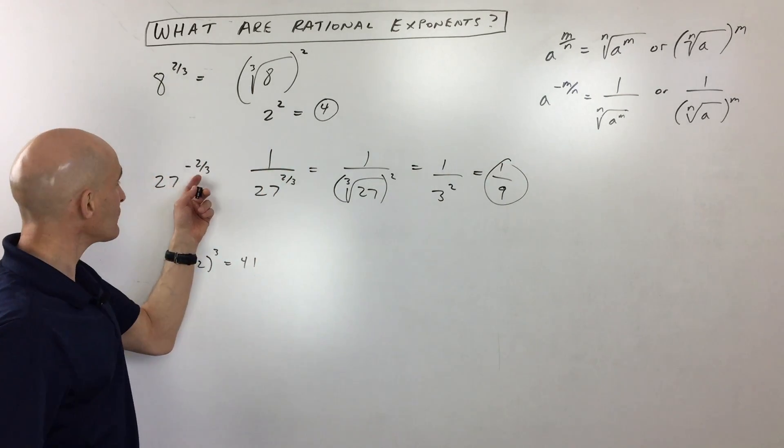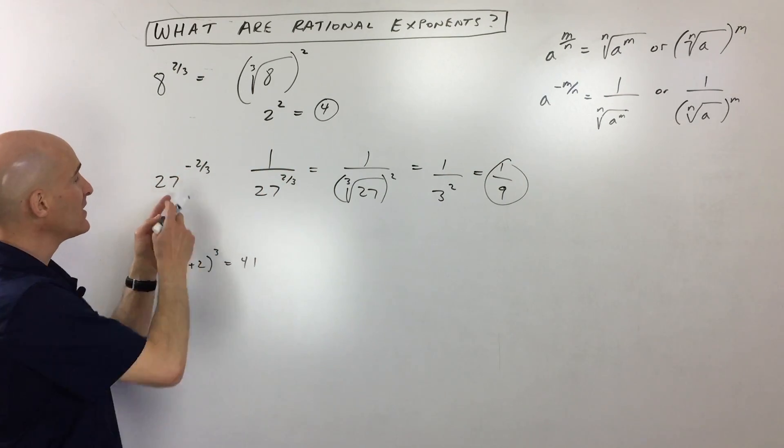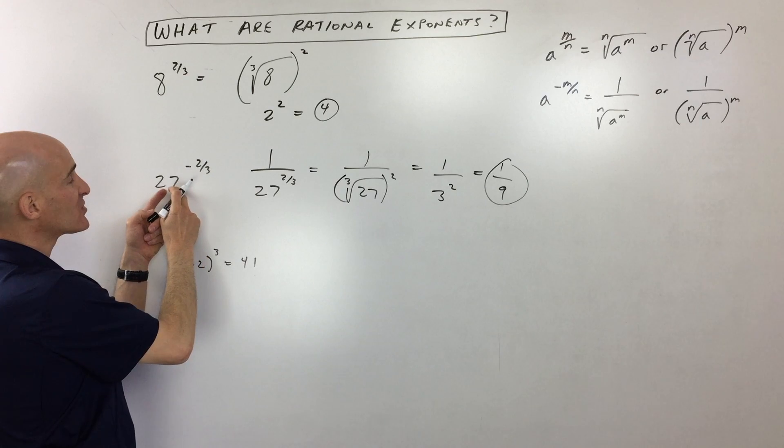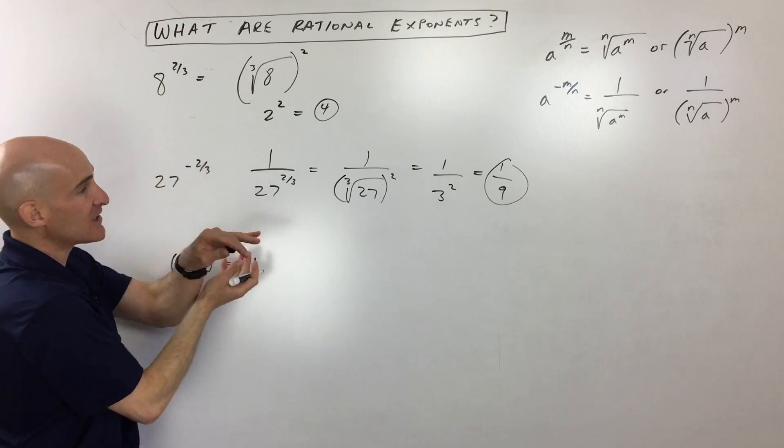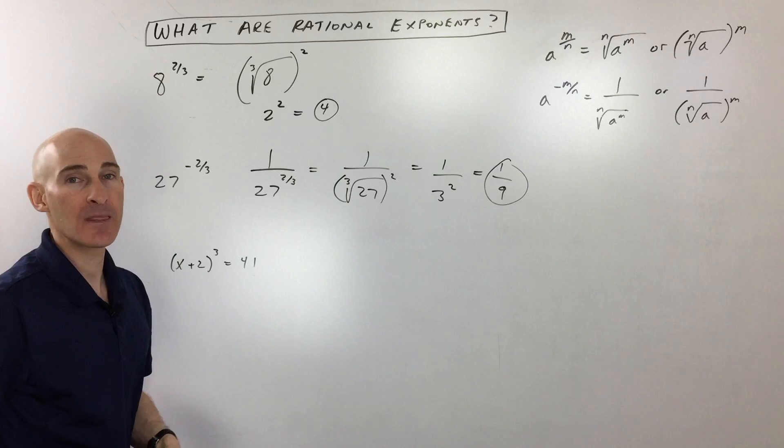Now, the other way to do this problem is just ignore the negative for a moment. Take the cube root of 27, which is 3. 3 squared is 9. And then take the reciprocal, and that gives us 1/9.